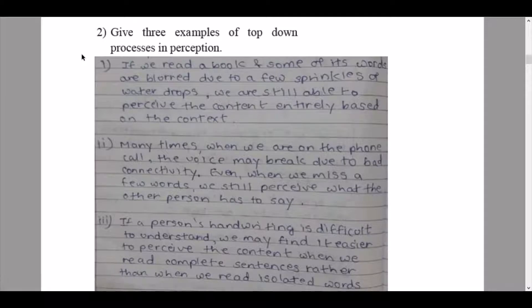Then we continue to our next question: give three examples of top-down processes in perception. The first example here is if we read a book and some of its words are blurred due to a few sprinkles of water droplets, we are still able to perceive the content entirely based on the context.